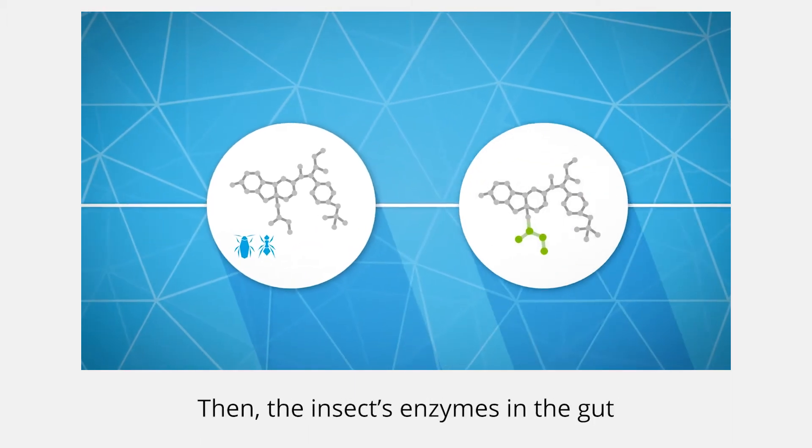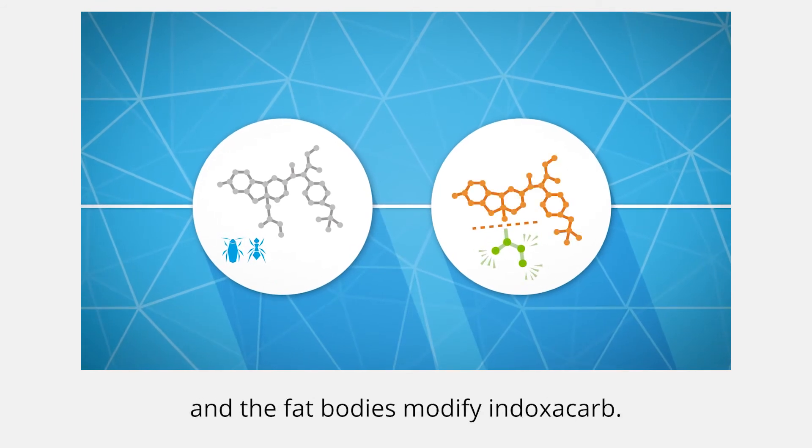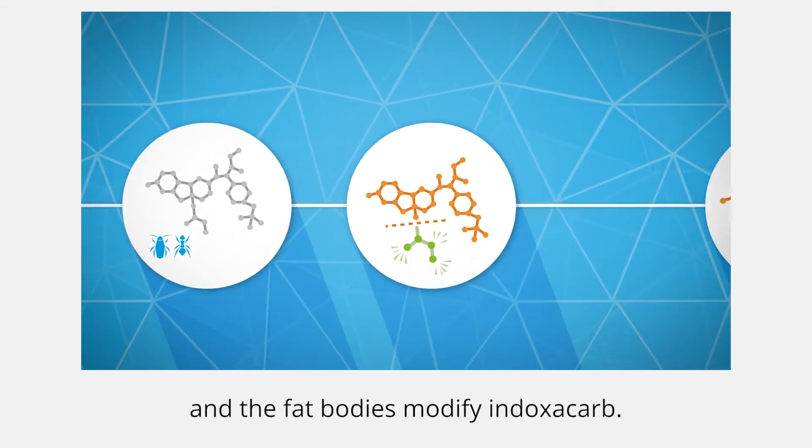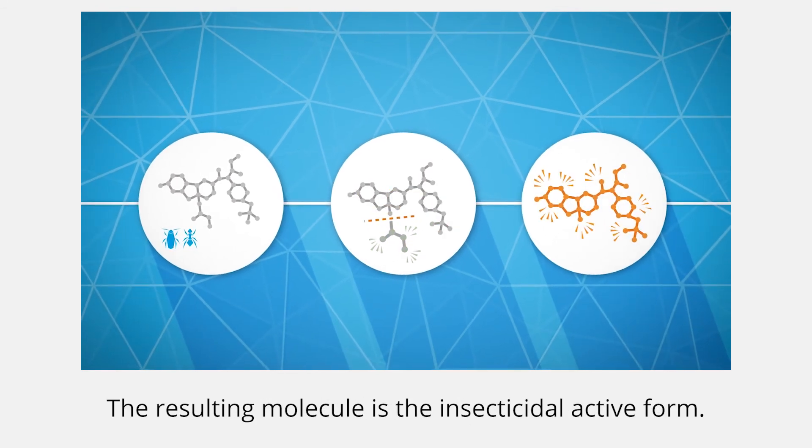Then, the insect's enzymes in the gut and the fat bodies modify indoxacarb. The resulting molecule is the insecticidal active form.